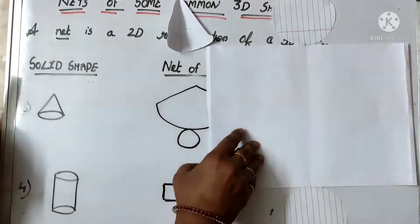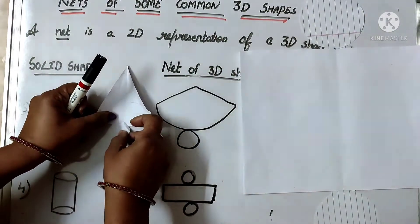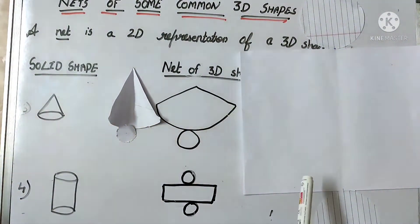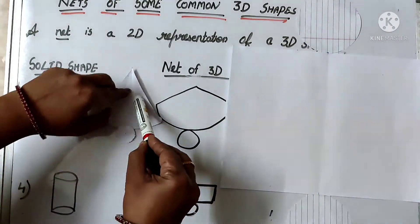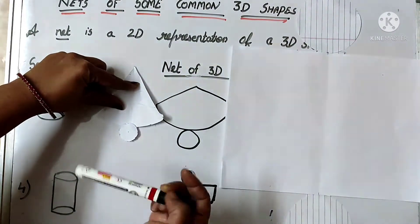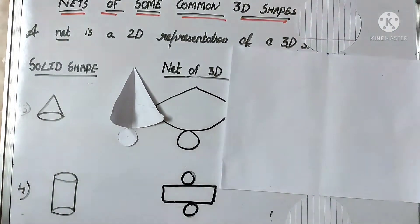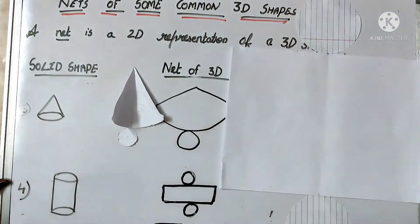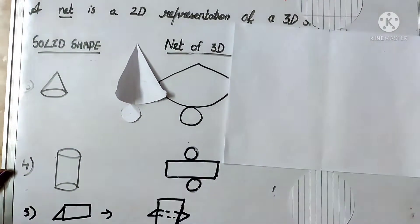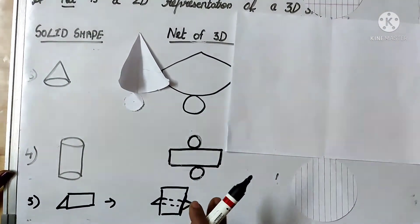So for cuboid, cube, cone, and cylinder — this is the net of a cone, and this is the net of a cylinder, that means a rectangle and two circles. A cone if you open it will look like two curved sides and a circle at the base. We also have the pyramid — if a pyramid gets opened up, how will it look? The net of a pyramid will have a rectangle in the center and triangle shapes on each side.